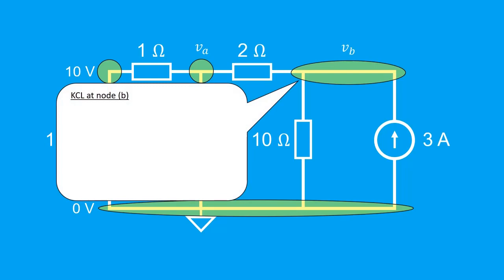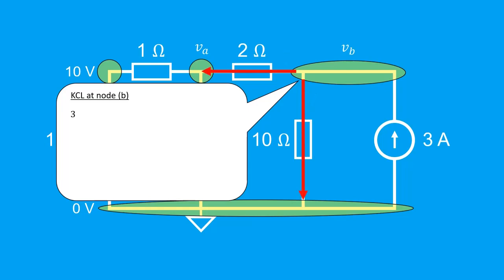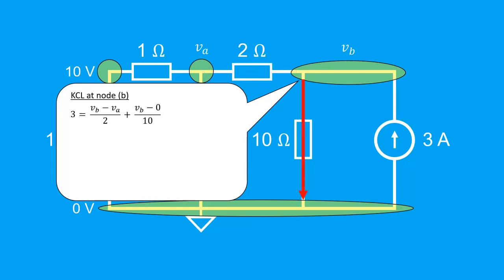Moving on to node B, we again write the KCL equation. The current entering the node is 3 amperes from the current source. For the other two branches, we don't know the directions, so we assume they move outwards. The sum of currents leaving node B is (VB minus VA) divided by 2 ohms, plus VB minus 0 divided by 10 ohms. Simplifying by splitting fractions, grouping VA and VB terms, and moving constant terms to the other side gives us our second KCL equation.